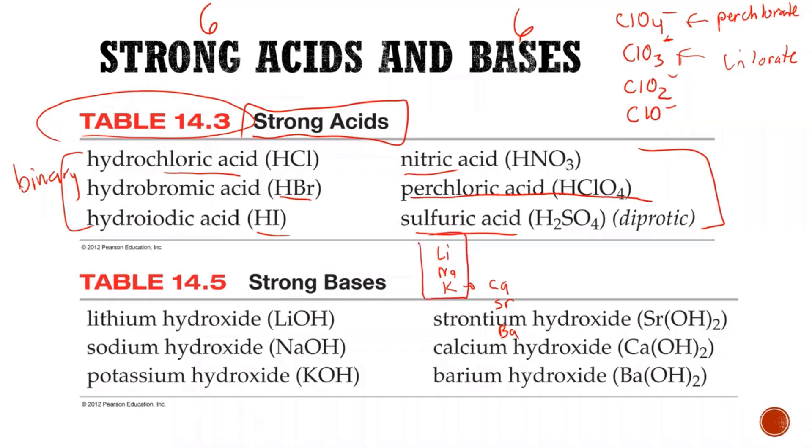Those are your six strong. So you can just go down a periodic table, lithium, sodium, potassium, and then move over from potassium, calcium, strontium, barium. And those are your six strong bases. So it's a lot easier to know the strong bases because you can use a periodic table.